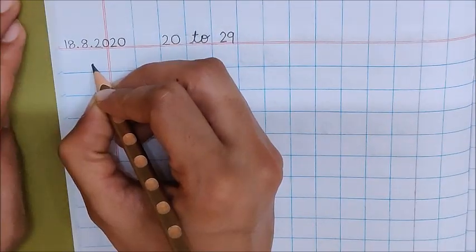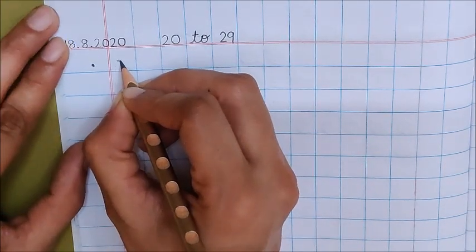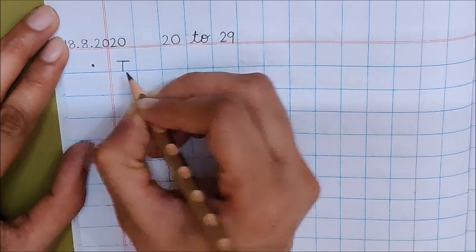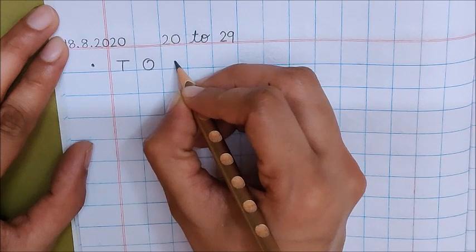Now below the date put a dot. Now in this box write down T for 10's house and in the next box O for 1's house. Now put a dot.